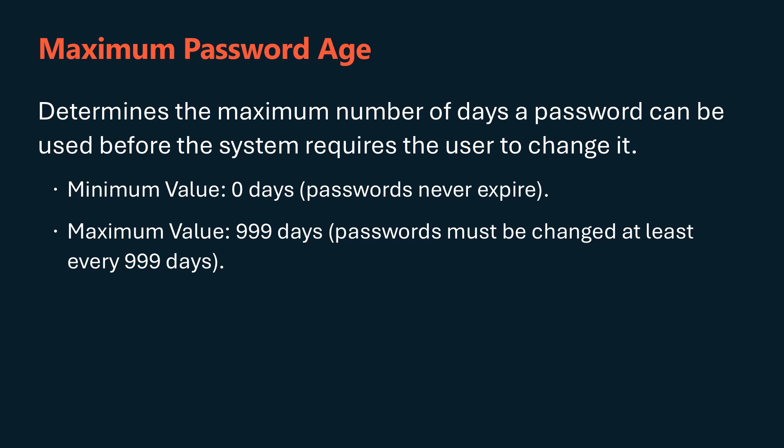The maximum password age policy determines the maximum number of days a password can be used before the system requires the user to change it. Regularly changing passwords reduces the risk of compromised credentials being used indefinitely. The minimum value is zero days — when set, passwords never expire. The maximum value is 999 days, and the default value is 42 days. 42 is probably the value because a lot of people at Microsoft like Hitchhiker's Guide to the Galaxy more than someone doing intensive security research to determine that 42 is the perfect number of days.